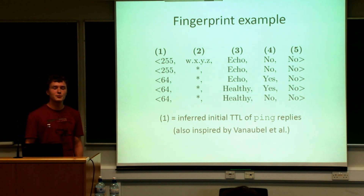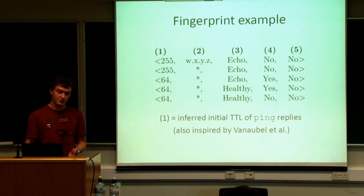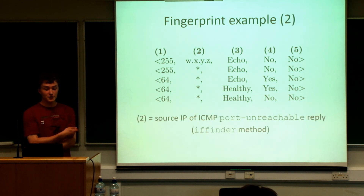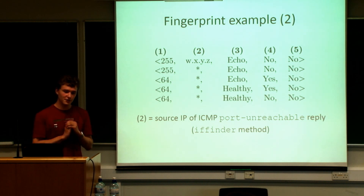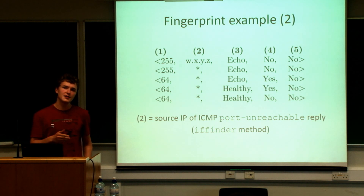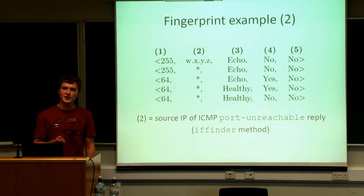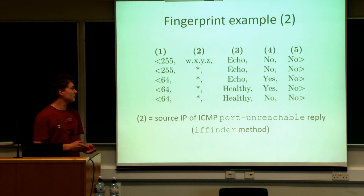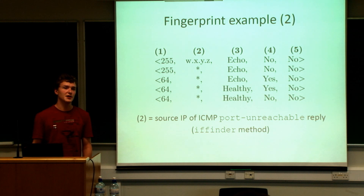Here is an example of the fingerprint we use in our methodology — five values. The first is a value inspired by the work of EIF2: the inferred initial TTL of ping replies. The second is the source IP of the ICMP port-unreachable reply. The EIF finder topology discovery tool sends UDP probes to IP interfaces with an unlikely high port number to get an ICMP port-unreachable reply. The trick is that the source IP of that message might not always be the same as the target, allowing you to infer that two IPs are aliases. We reproduce this by sending a single UDP probe to each IP and recording the source IP of the port-unreachable reply if one is received.